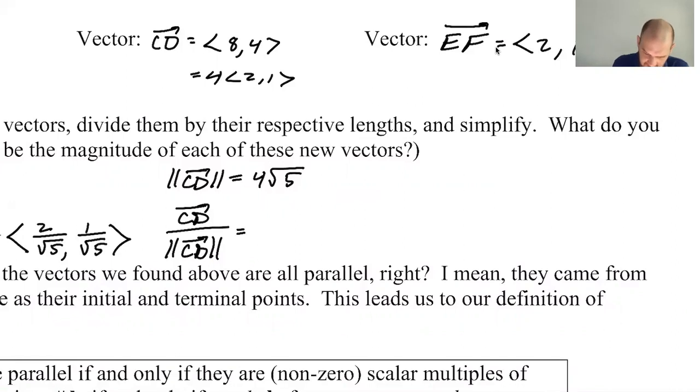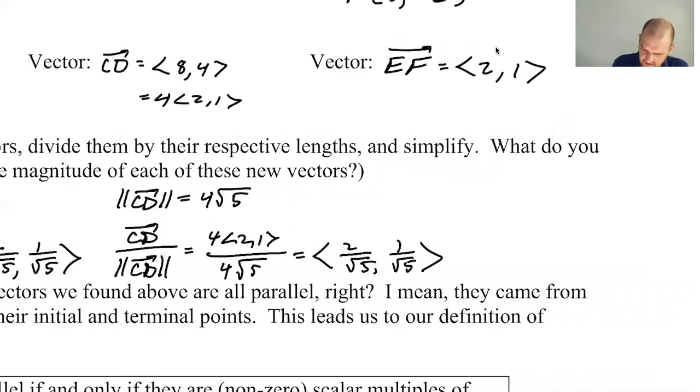This, again, you get 4<2,1> over 4 root 5. This again gives me 2 over root 5, 1 over root 5, and then you can just see that EF over the magnitude of EF is going to give me 2 over root 5, 1 over root 5.